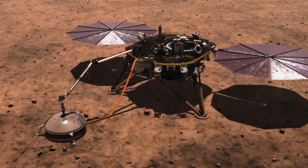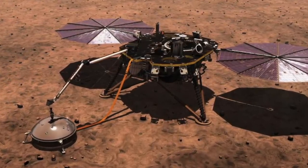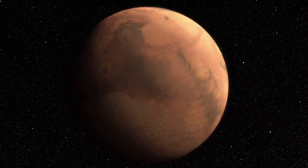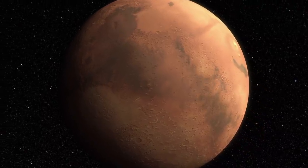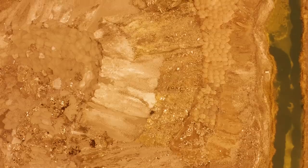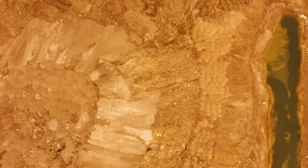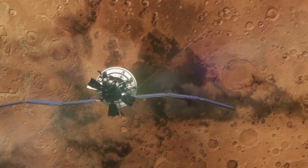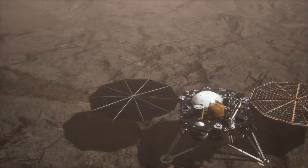InSight is equipped with a magnetometer, the first on the surface of Mars to detect magnetic signals. Mars does not have a constant magnetic field like the Earth's, although this was probably the case billions of years ago. Instead, it has small ranges of magnetic fields caused by rocks that have retained their magnetization over the millennia. Some of these fields have been measured from satellites, but InSight has the first magnetometer ever placed on the surface of Mars.